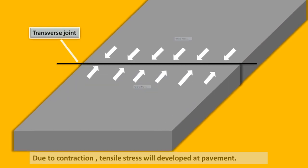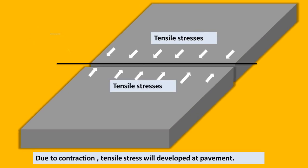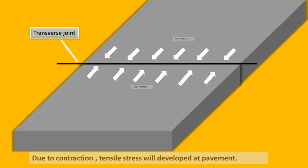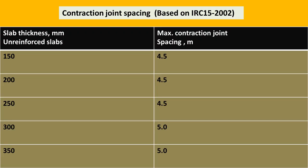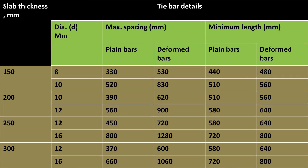This is the table of contraction joint spacing based on IRC 15:2002. This is the table of dowel bar details and slab thickness, and the last one is the tie bar details and slab thickness table.